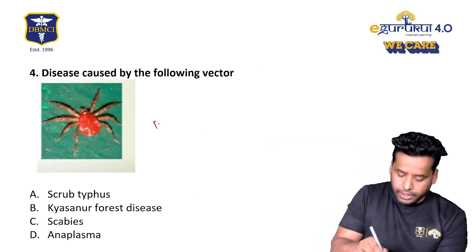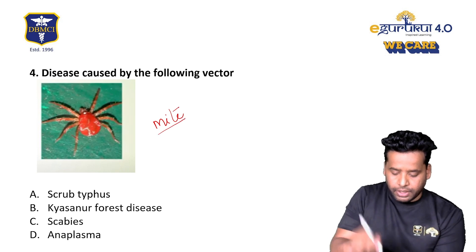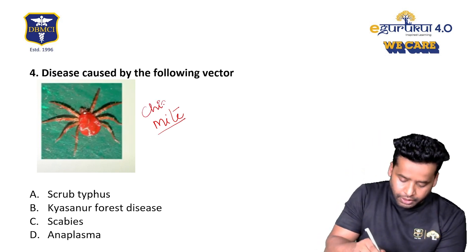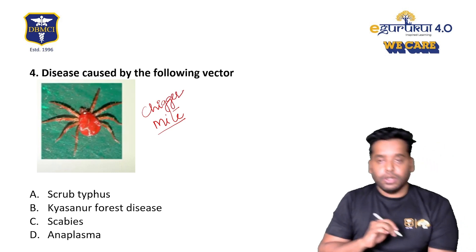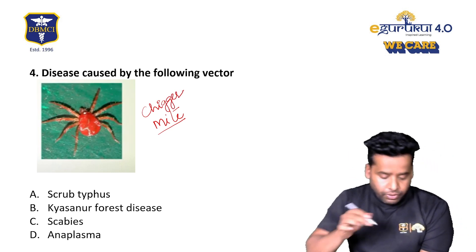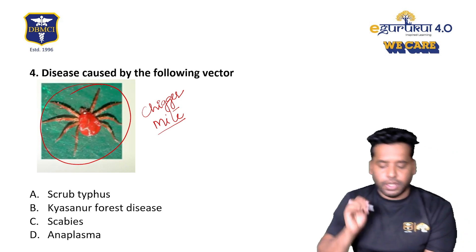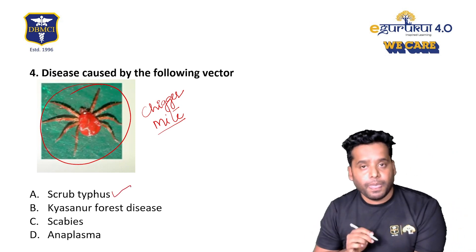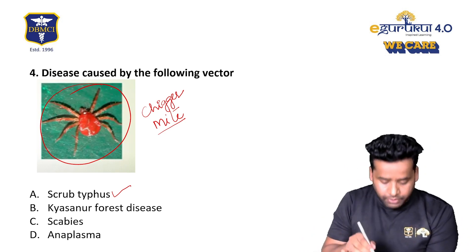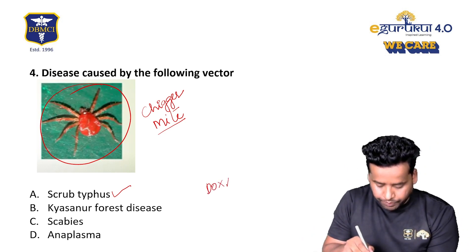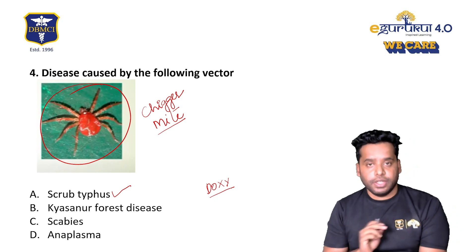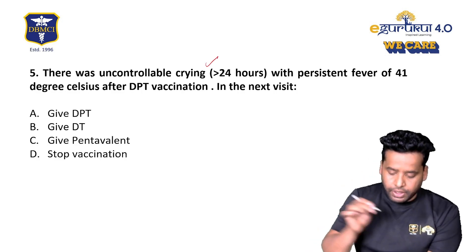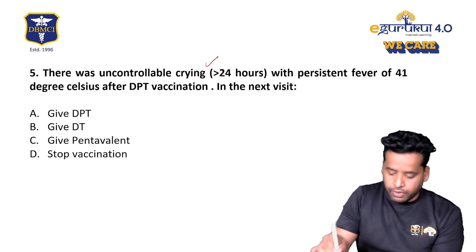The vector here is the trombiculid mite. The larva of the trombiculid mite is the chigger mite. The chigger mite is responsible for scrub typhus. The drug of choice for scrub typhus is doxycycline.